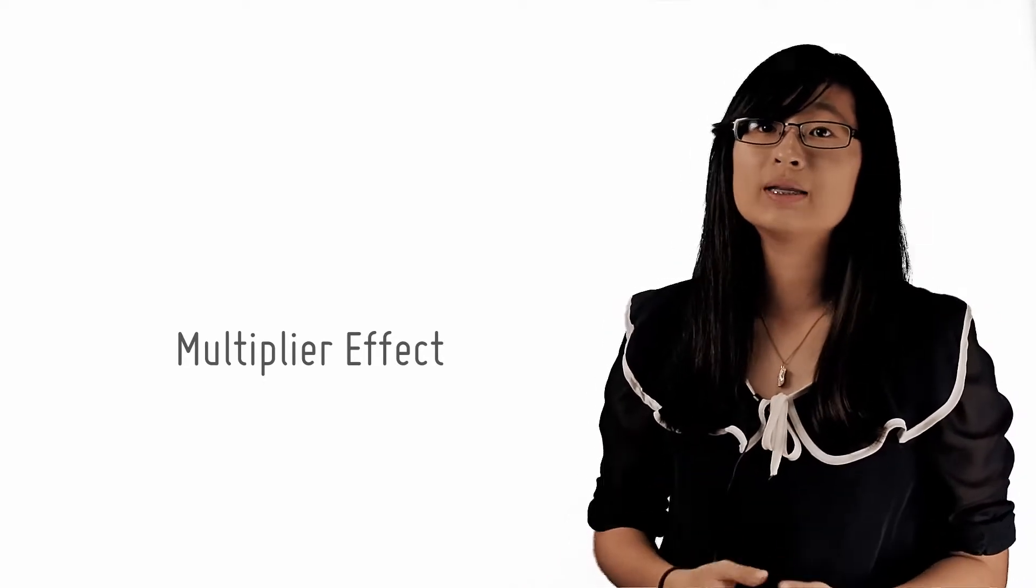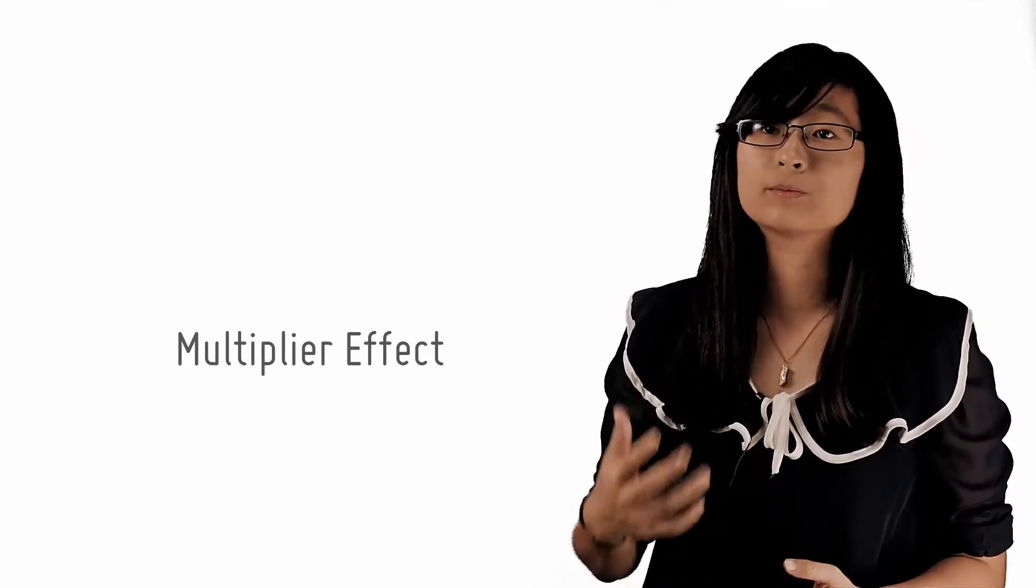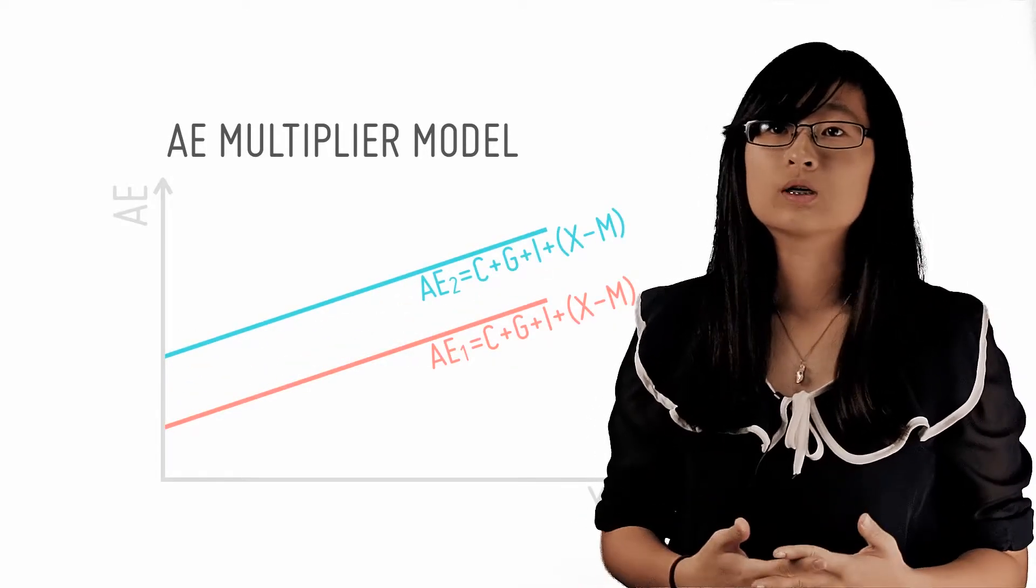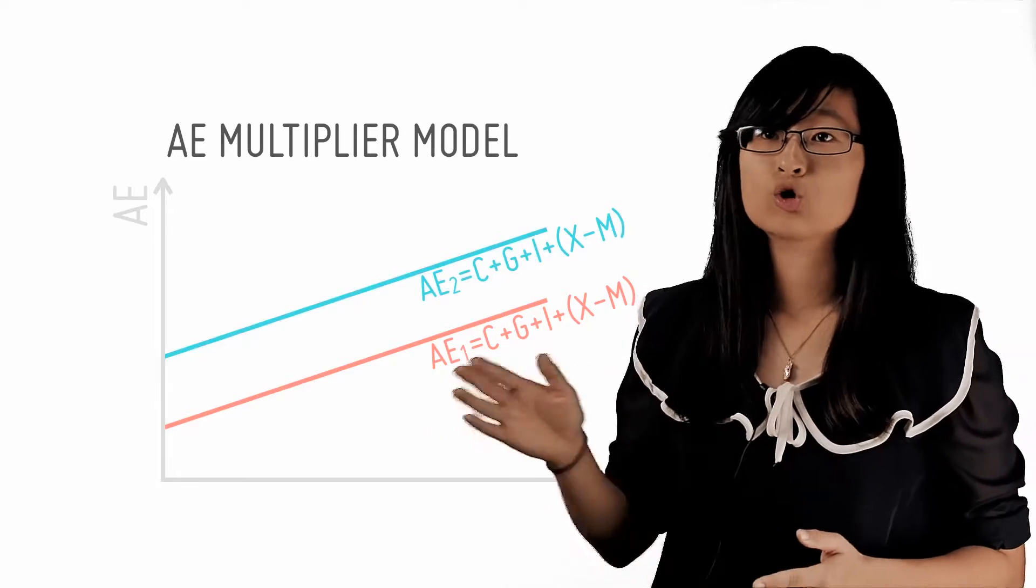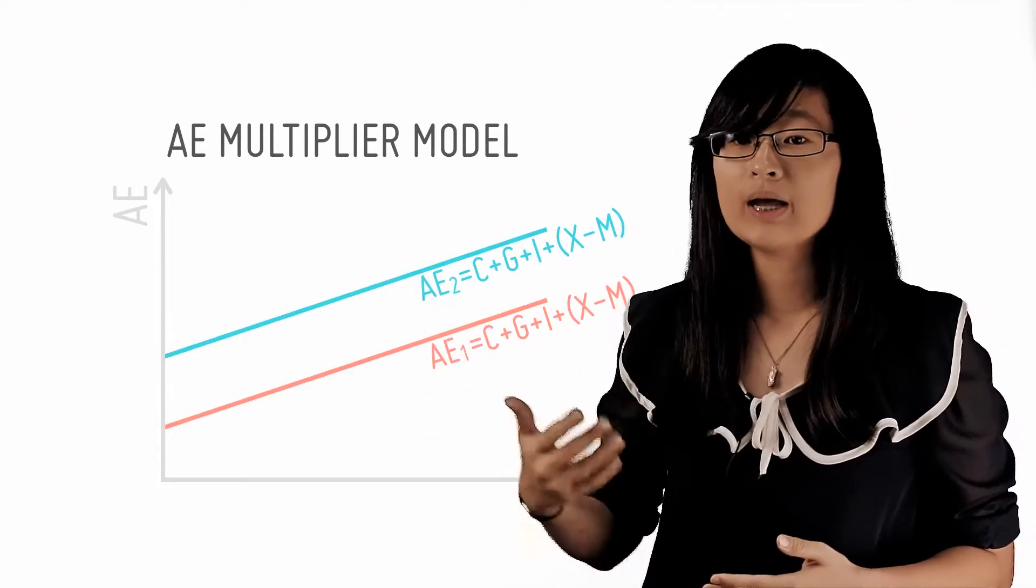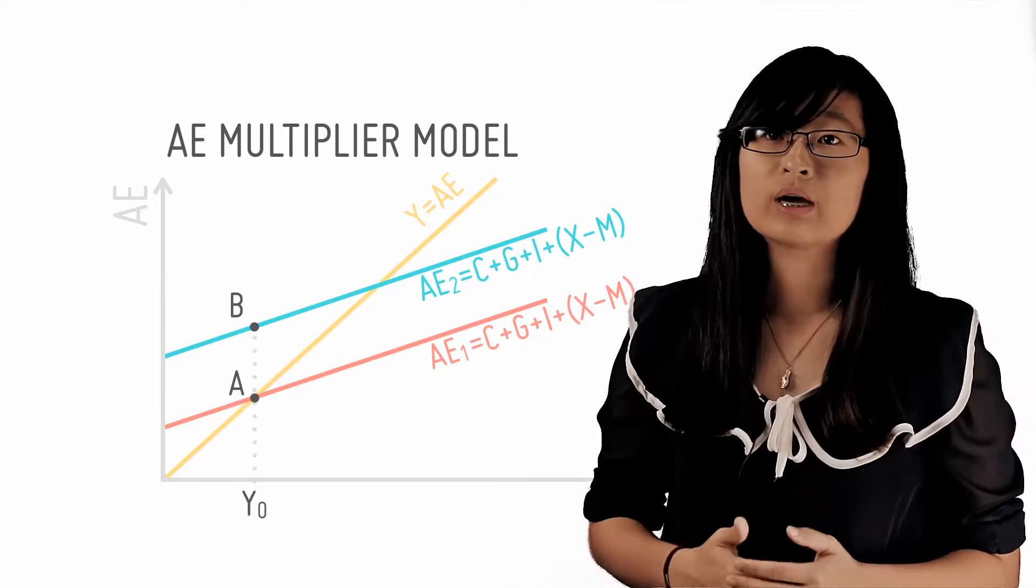Essentially, you need to show at least two rounds of the multiplier and explain when it stops in an exam situation. We start with an autonomous increase in aggregate expenditure, as shown by the parallel upward shift of the planned AE curve from AE1 to AE2.